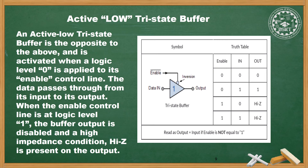An active low tri-state buffer is the opposite. Only one bubble is added to the enable line to indicate active low. When enable is 0, the gate is enabled and output is the same as input. When enable is high, the output is in high impedance state. An active low tri-state buffer is activated when logic level 0 is applied to its enable control line and data passes through from input to output. When the enable control line is at logic level 1, the buffer output is disabled and high-Z is present on the output — exactly opposite to active high.